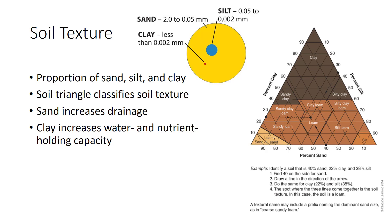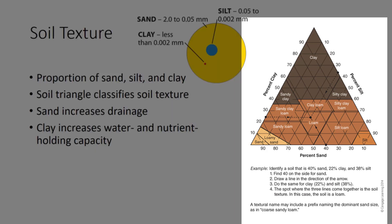Soil texture is the proportion of sand, silt, and clay present in the soil. A soil triangle is used as a method of classifying soil on the basis of mineral content texture. The USDA soil textural triangle is easy to use: first analyze the soil to find out the proportions of sand, silt, and clay. For example, if you have 40% sand, 38% silt, and 22% clay, find 40% on the sand axis and draw a line parallel to the silt axis. Then find either 38% silt or 22% clay — if you choose clay, look for 22% on the clay axis and draw a line parallel to the sand axis to intersect the previous line. The part of the triangle where the two lines intersect indicates the class of soil texture, which in this case would be classified as a loam.